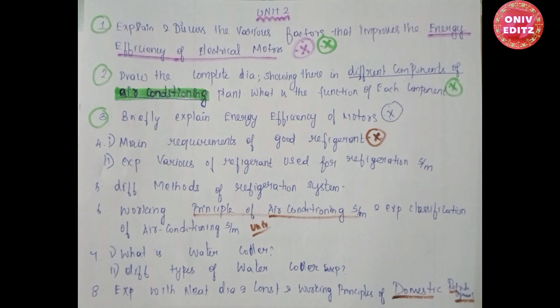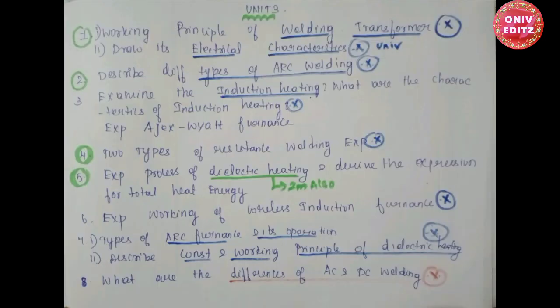Unit 3, first question: explain the working principle of welding transformers — this is very important — and describe its electrical characteristics. Second question: what are the different types of arc welding? Third question: examine induction heating — what are the characteristics of induction heating? Explain the advantages.